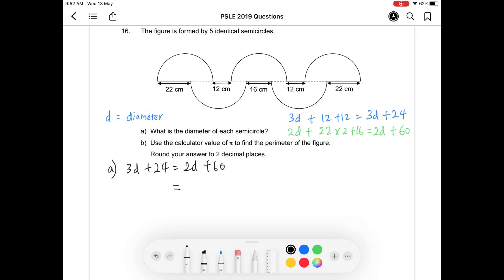So this is how you use balancing beam. You can actually remove 2D from the right side of the equation and then you remove 2D from the left side as well. So we are left with D here and then you remove 24 from the left side. Make sure you remove 24 from the right side and you should get 36 here. So that's how we get diameter equal to 36 cm.